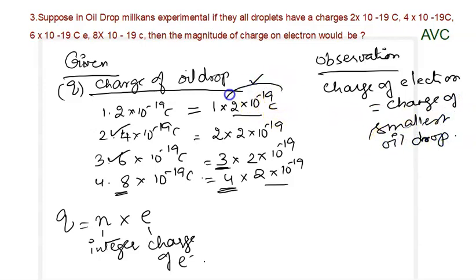What is the smallest oil droplet? This is 2 × 10^-19 coulombs. Therefore, the charge of electron equals 2 × 10^-19 coulombs.